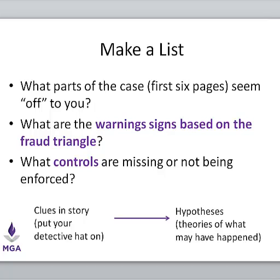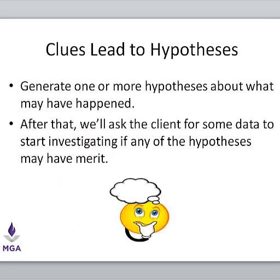That's going to end part one. From those hypotheses or theories, we'll go back to the client and say we would like to see this set of data. From that data, we'll be able to test those hypotheses to see if they are true. For part one, we want to generate one or more hypotheses and indicate all the places where fraud triangle risk appears in the story. Once the class has had a chance to share their thoughts, I'll summarize it and we'll ask the client for data to test whether our hypothesis is true.